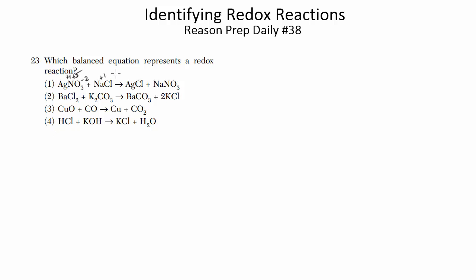On the reactant side, Na is +1 and Cl is -1. Now on the product side: Ag is +1, Cl is -1, Na is +1, and the nitrate components are -2 and +5. Notice these oxidation numbers are the same — Ag is still +1, Cl is still -1, Na is still +1, and the components of nitrate are still the same. So that's not our answer.